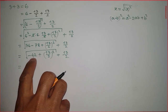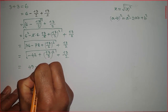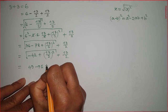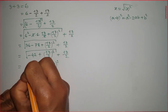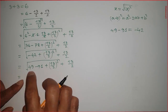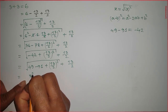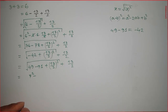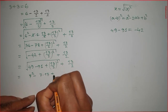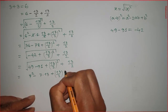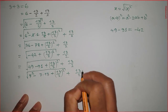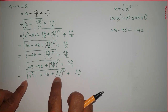Now I can rewrite this: 49 minus 91 equals minus 42, because 49 minus 91 is minus 42. Plus (13/2) whole square under the square root, plus 13 over 2. Then 49 can be written as 7 squared, and 91 can be written as 7 times 13. Plus 13 over 2, all under the square root, plus 13 over 2 remaining the same.